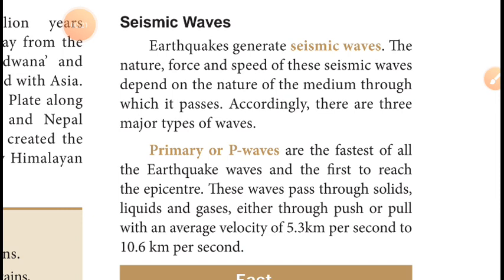Seismic waves are produced by the force of nature and their speed depends upon the medium they pass through. Accordingly, seismic waves are divided into three types. The first type is primary waves, also called P waves. P waves are the fastest of all earthquake waves and are the first to reach the epicenter. Primary waves pass through solid, liquid, and gases.